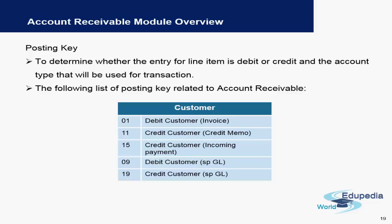Posting keys determine whether an item is a debit or a credit and what kind of account type is being used. As you may have seen in the previous video, we do not need to manually enter debit or credit in the system — it is the posting key which automatically derives whether an amount is a debit or a credit.